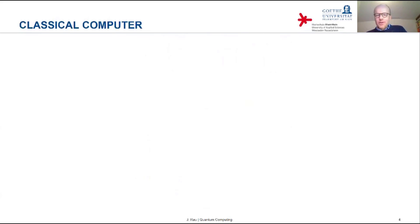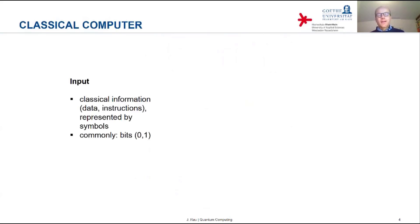We leave behind all the preliminaries and today we will start talking about actual computation. We will start with a very brief discussion of a classical computer in order to contrast that later on with the working of a quantum computer. Put very simply, a classical computer is a device — a machine — that receives input. That input is classical information and it can relate to anything: it can be data, it can be instructions, the program instructions for what the machine is supposed to do. This classical information input is represented by symbols; in principle any finite alphabet can do.